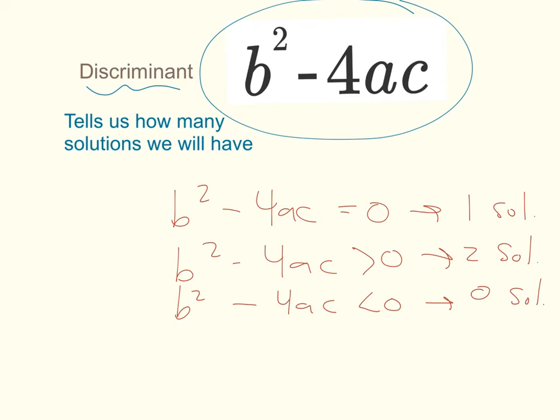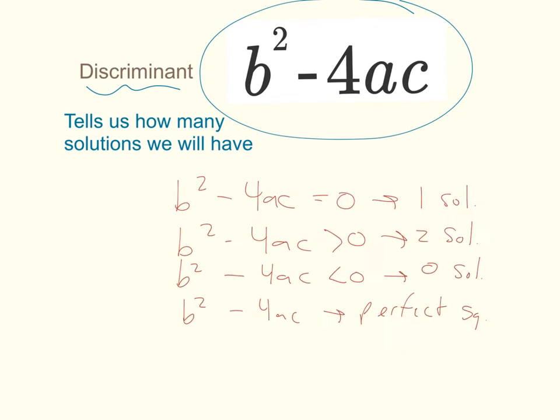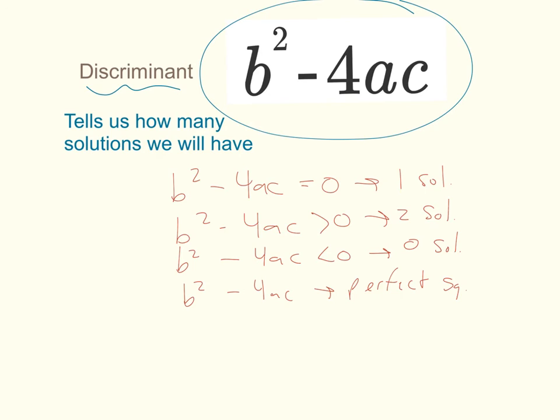One thing you can also use a discriminant for to check is if it gives you a perfect square, so if b squared minus 4ac gives you a perfect square, so say it gives you 4, 9, 25, 16, 36, any one of those, if it gives you a perfect square, that tells you that it is actually going to be a factorable equation, so that means you shouldn't even be using the quadratic formula. So you see that, if it comes out to be a perfect square, that means that we can factor that. So factor it, don't use the quadratic formula.